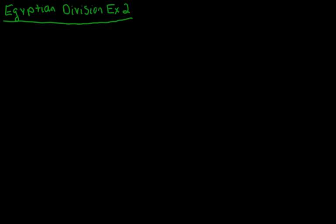This is going to be our second example of Egyptian division. Let's say I have the number 46, and I want to divide it by something that won't go into it evenly. Pick 7.